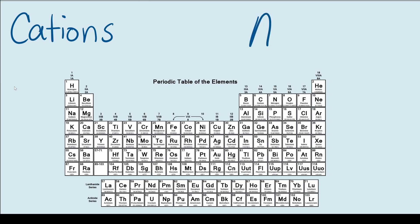Anions are basically the opposite of cations — they are negatively charged ions and they gain electrons to acquire that negative charge. Examples of anions can be seen in this row right here. These elements are known as halogens and they're quite notorious for being electronegative. They really want an extra electron so they can achieve a full octet.